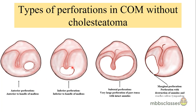The perforation present inferior to the handle of malleus is called an inferior perforation. Subtotal perforations are very large perforations of the pars tensa with a very thin rim of remaining tympanic membrane, and the annulus is intact. There is another variant known as marginal perforations — these are large perforations that involve the annulus of the tympanic membrane and reach the sulcus tympanicus. In cases of COM without cholesteatoma, marginal perforations are a riskier type and are often associated with complications.